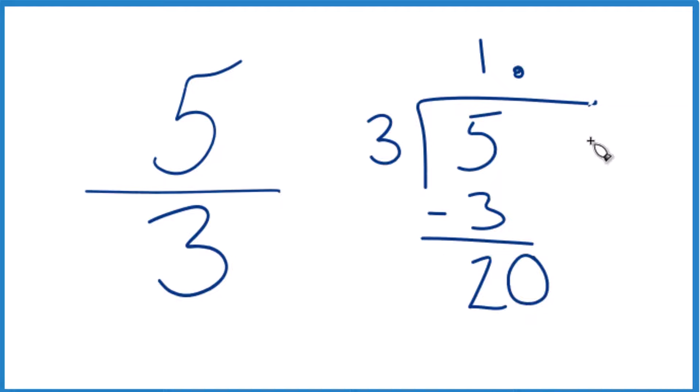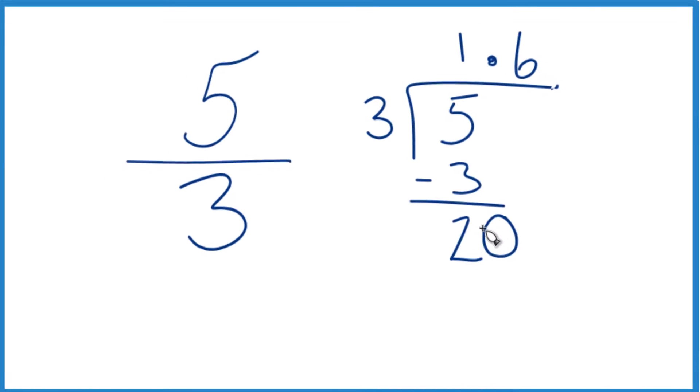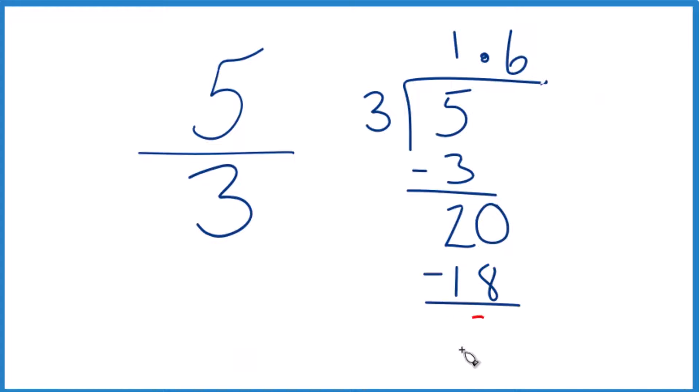3 times 7 would be 21, that's too much, so how about 3 times 6? So 6 times 3, that's 18, subtract and we get 2, we're going to move over 1 and call it 20.